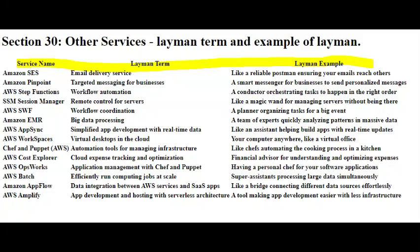For example, if the food delivery is delayed, the planner can automatically adjust the schedule. AWS Step Functions orchestrates these tasks, just like your party planner orchestrates the various aspects of your event, making sure everything comes together seamlessly.